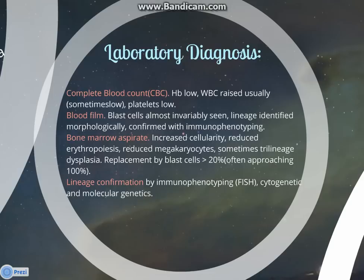Laboratory diagnosis. The blood count: hemoglobin will be low, white blood cells are usually raised, and platelets are low. In the blood film we will see blast cells almost invariably. Lineage is identified morphologically and confirmed with immunophenotyping. The bone marrow aspirate will show increased cellularity, reduced erythropoiesis, reduced megakaryocytes, sometimes trilineage dysplasia, and replacement by blasts of more than 20%. The lineage is confirmed by immunophenotyping, FISH, cytogenetics, and molecular genetics.